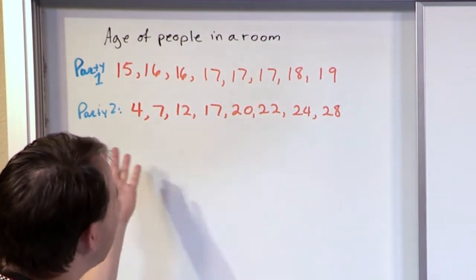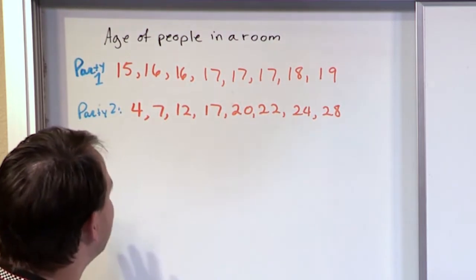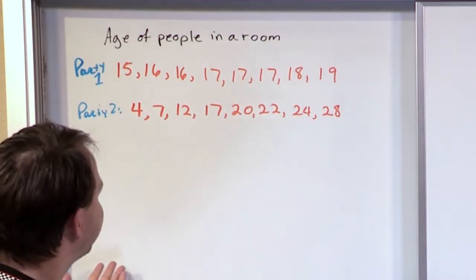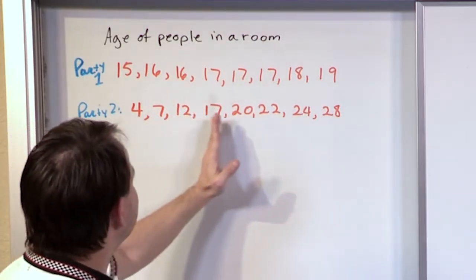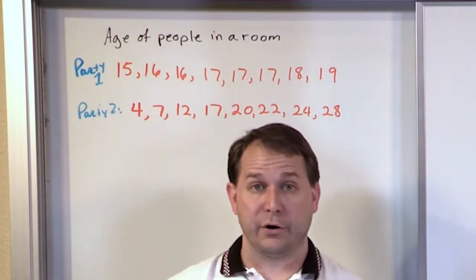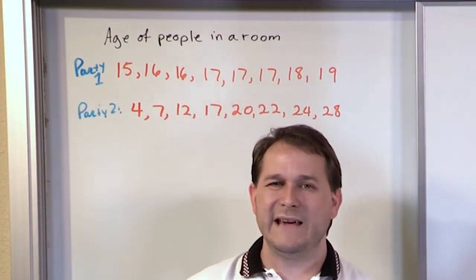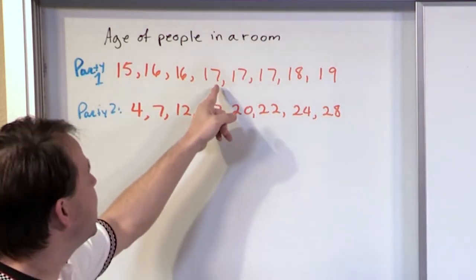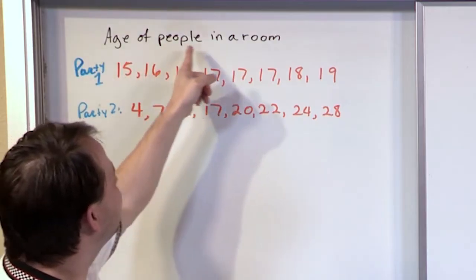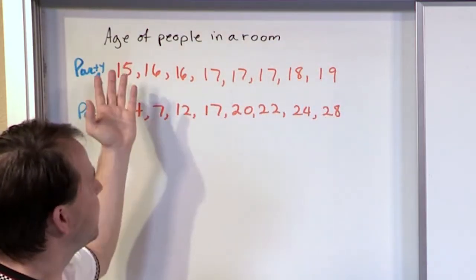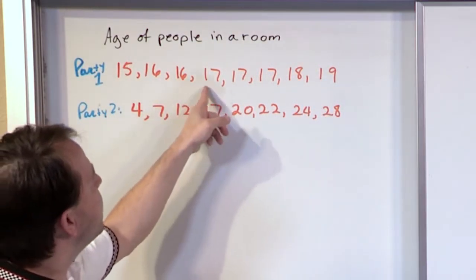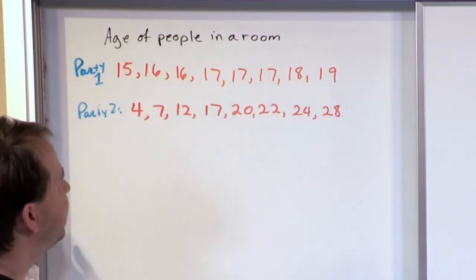So if I had to calculate the mean of party number 2, I'm just eyeballing it, the mean is probably going to be somewhere around 20 years old or 19 years old. And these values are going to be dispersed or have dispersion around that mean that seems to be greater than party number 1.